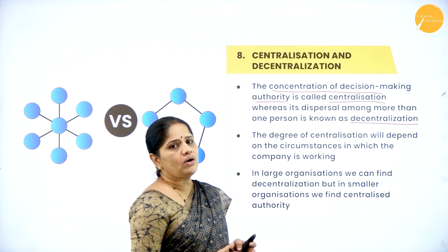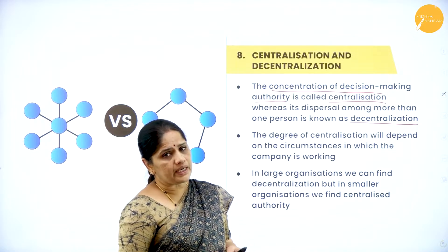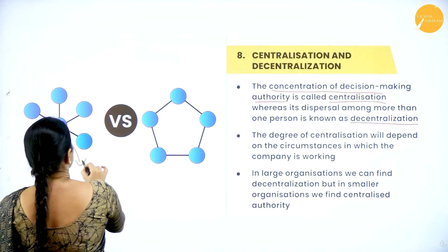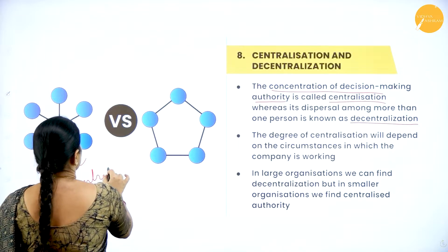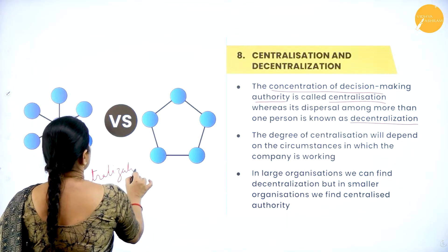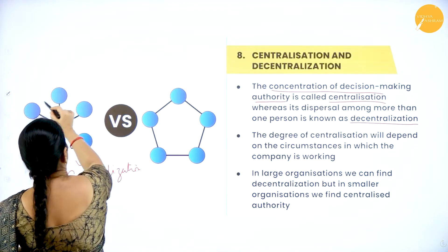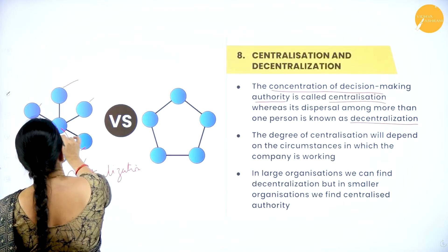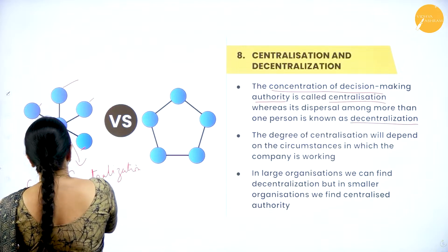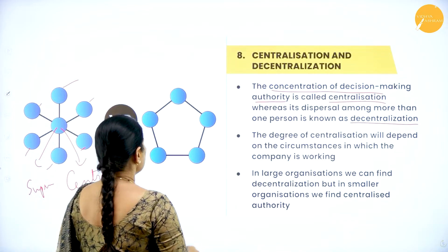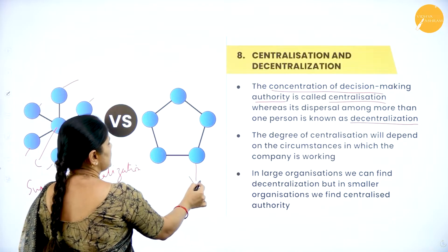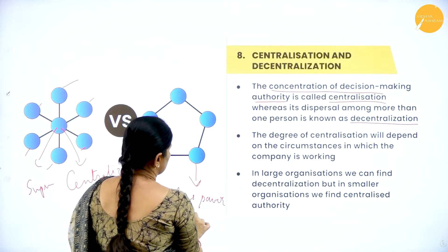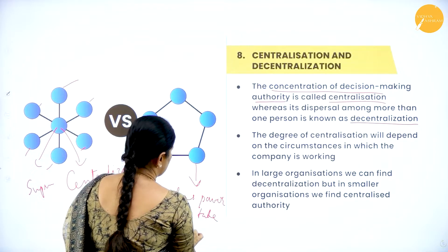Looking at the diagram, centralization means all employees must contact the main superior before taking any decision. In decentralization, each person has the power to take decisions independently. The degree of centralization — how much power is given to subordinates versus retained at the top — depends on the circumstances and nature of the organization.